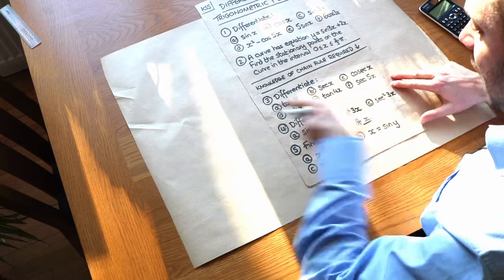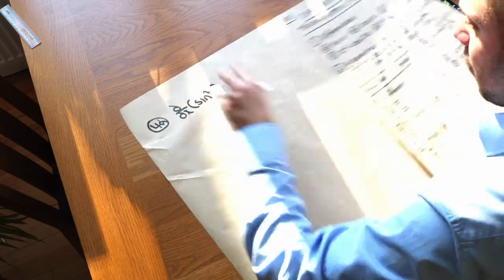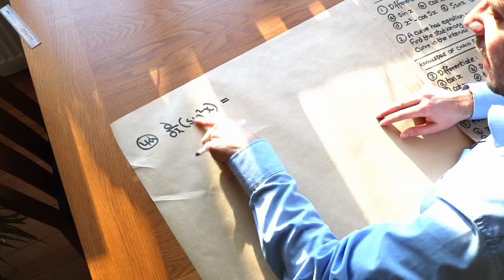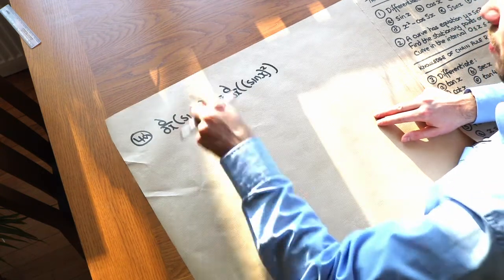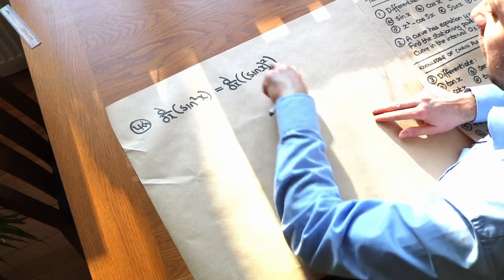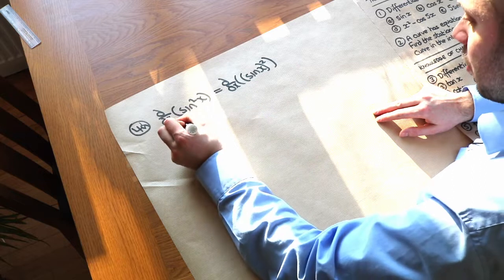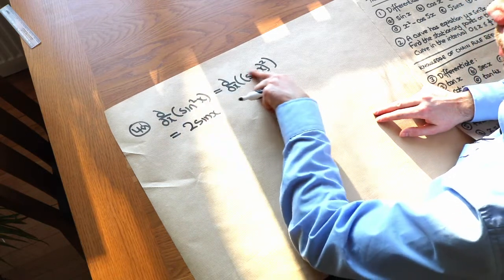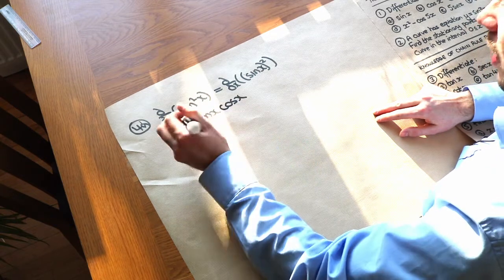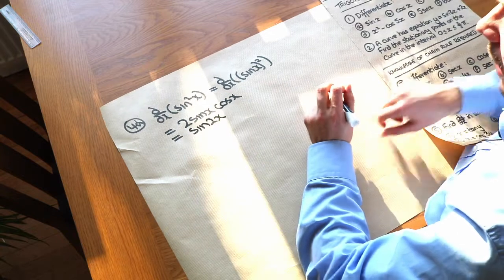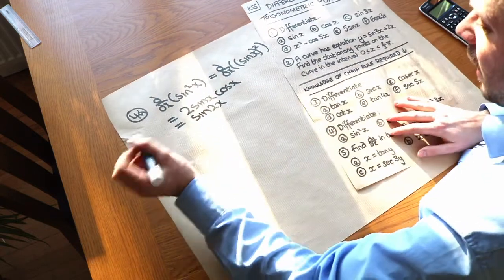Now we differentiate trig functions to a power. For sin²x, rewrite it as (sin x)². The outer function blah² differentiates to 2 blah, then multiply by the inner function sin x differentiated, which is cos x, giving 2 sin x cos x. You might notice this equals sin 2x by the double angle formula — so that little 2 as a power moves down to become a 2 in front.